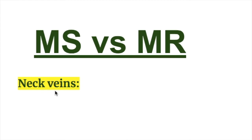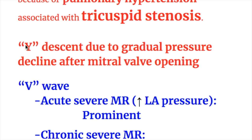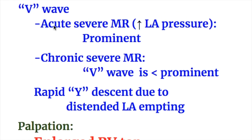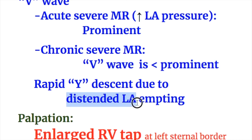The differences in neck vein appearance: In mitral stenosis, the A wave is due to vigorous right atrial systole because of pulmonary hypertension associated with tricuspid stenosis, and the Y descent is due to gradual pressure decline after mitral valve opening. So the two waves in mitral stenosis are the A wave and Y descent. Whereas in mitral regurgitation, we have a V wave and Y descent. In acute severe MR, there is increased LA pressure with a prominent V wave, while in chronic severe mitral regurgitation the V wave is less prominent. The rapid Y descent in mitral regurgitation is due to distended left atrial emptying.